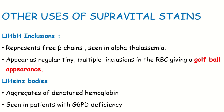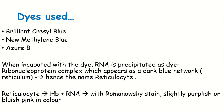HBH bodies are also aggregates of denatured hemoglobin seen in G6PD deficiency. For reticulocyte counting, supravital staining uses BCB (Brilliant Cresyl Blue) or NMB (New Methylene Blue). When we incubate blood with this dye, the ribosomal RNA in RBCs forms a complex that appears as a dark blue network, which is why it is called reticulum.